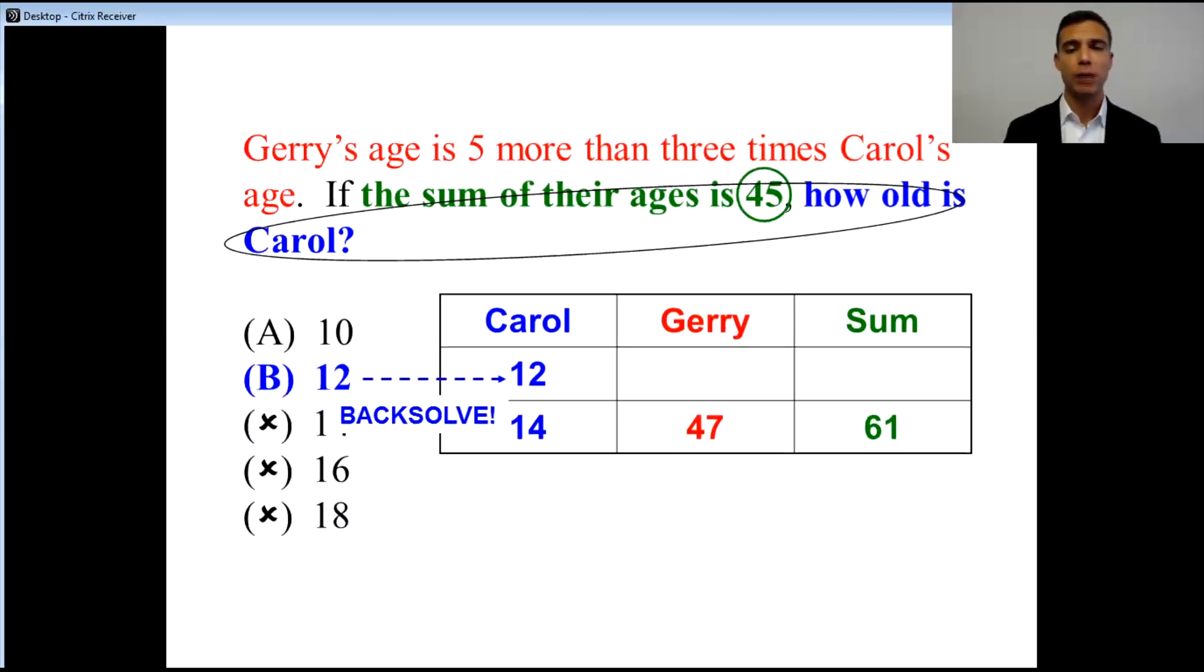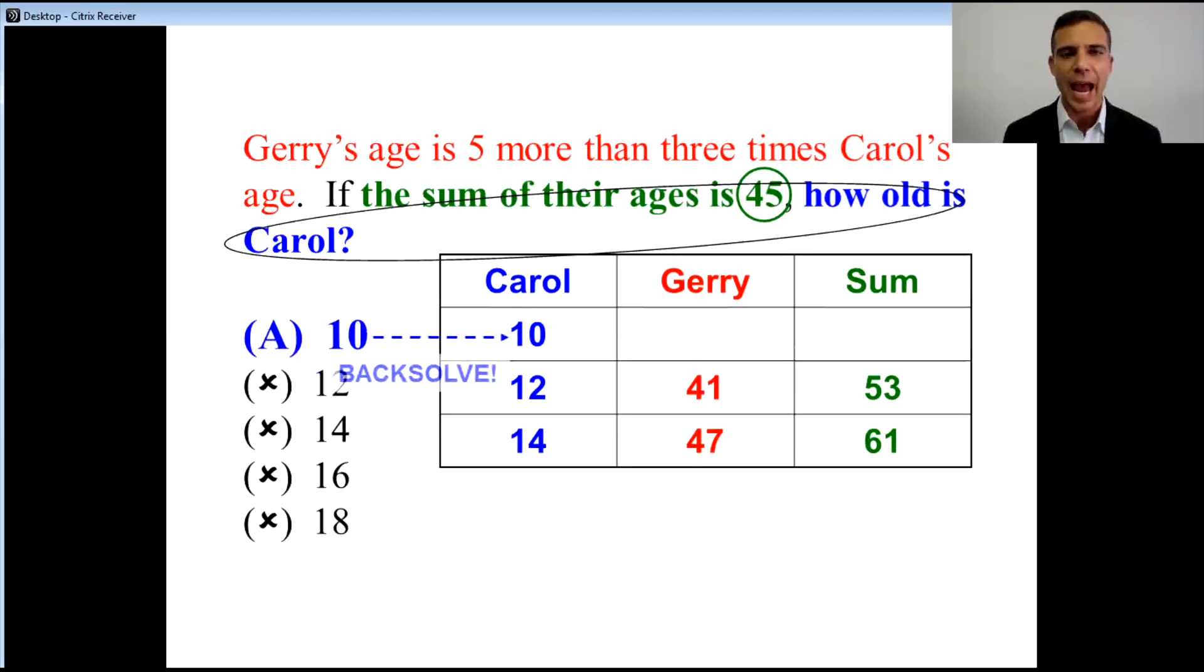Well, if Carol is 12, how old is Jerry this time? When we take a look at Jerry as five more than three times Carol, three times 12 is 36, plus our five gets 41. So how much is the sum this time around? 53, but that's still too big. So what must my correct answer be? It has to be A.